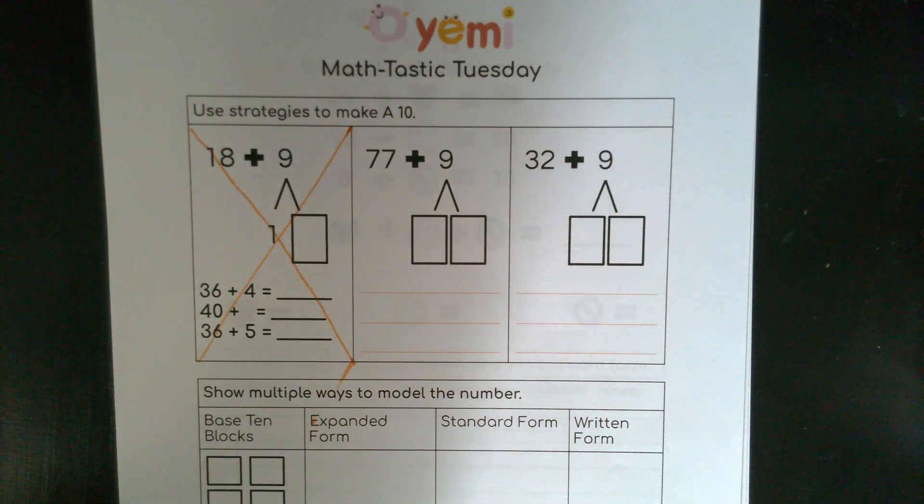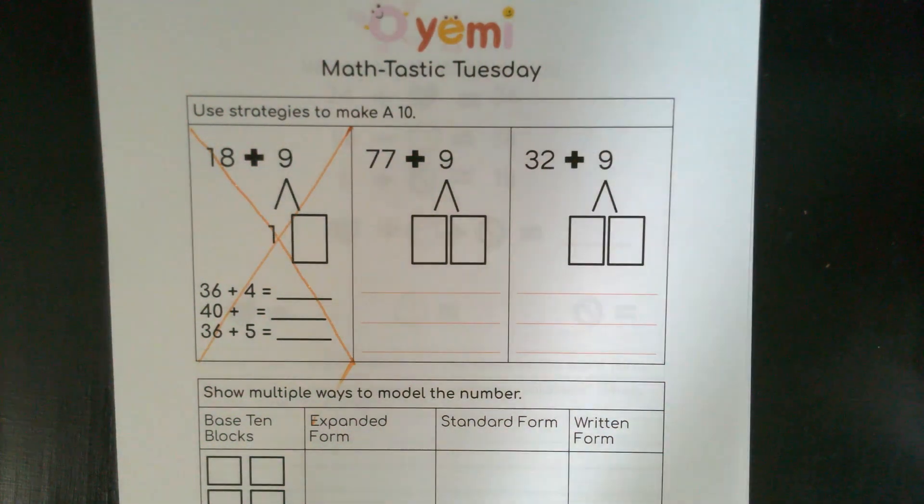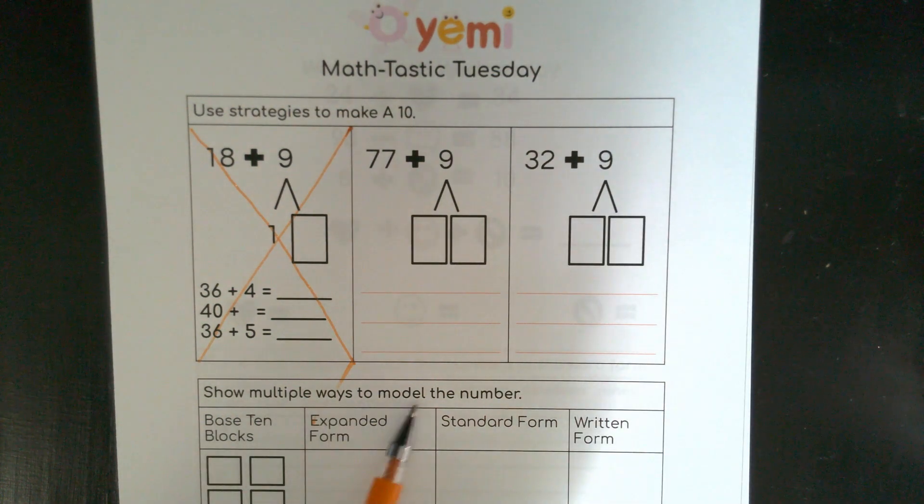Hello there. It's a Math-tastic Tuesday. We are going to make a 10. That's the strategy we're really honing in on this week. And then down at the bottom, we're going to show ways to model the number.